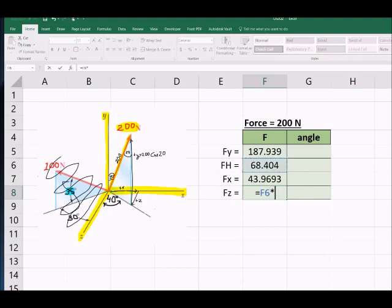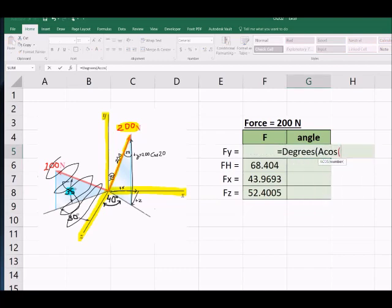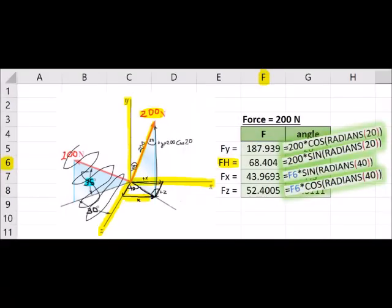And then we're going to use that hypotenuse to get fx, which is opposite the 40 degrees. So opposite is sine, and then z is adjacent to the 40 degrees. That would be cosine. The angles, this is the angle between the vector and the coordinate axes. And those are adjacent to one another. So those are all going to be cosines.